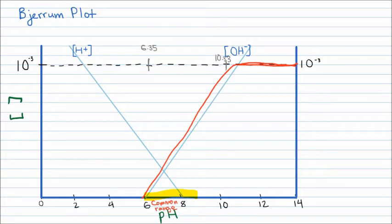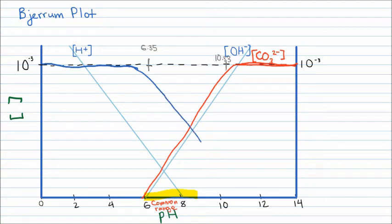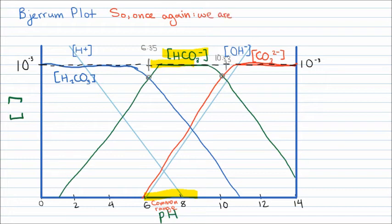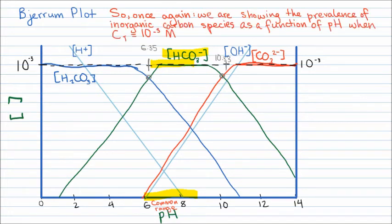Approaching a pH of 10.33 from the right, the carbonate concentration begins to decrease. At pHs below 6.35, we assume carbonic acid concentrations equal C total, and again we draw a straight line. Carbonic acid concentrations begin to decrease approaching a pH of 6.35 from the left. At pHs between 6.35 and 10.33, bicarbonate is the dominant species and it is plotted similarly. Note that bicarbonate is usually the dominant species in natural waters. In summary, this plot shows the prevalence of inorganic carbon species as a function of pH when Ct equals 10 to the negative 3 molar.